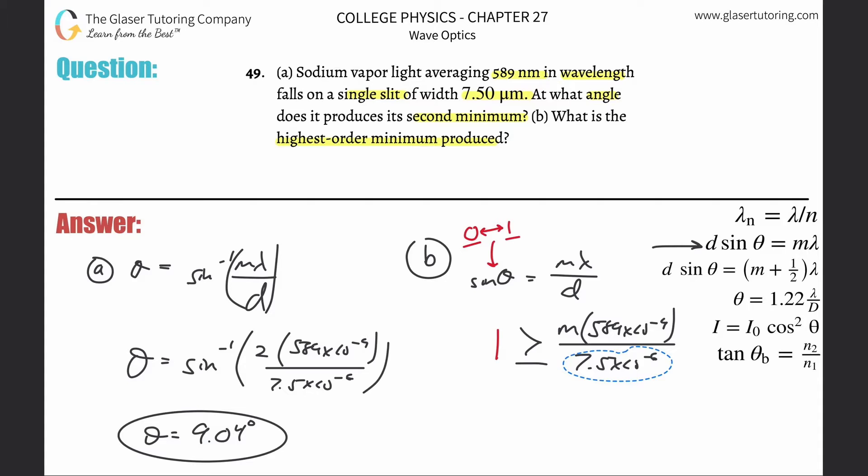Let's reduce this: one has to be - and I don't like using inequalities, but we'll do it here - 589 times 10 to the minus 9th divided by 7.5 times 10 to the minus 6th is going to be m times 0.0785. Divide this number out on both sides. This is now 1 divided by that value.